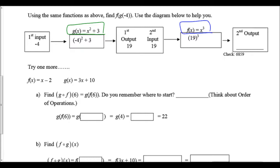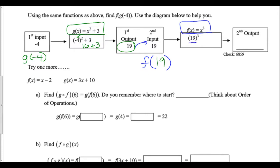Using the same functions, we're now going to find f(g(-4)). First we find g(-4) by plugging -4 into g(x): (-4)² + 3 = 16 + 3 = 19. Now we find f(19) by cubing it: 19³ = 6,859. We'd obviously have a calculator for that one — that's our final answer.